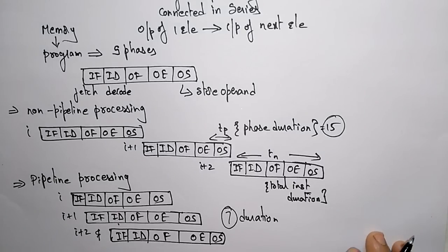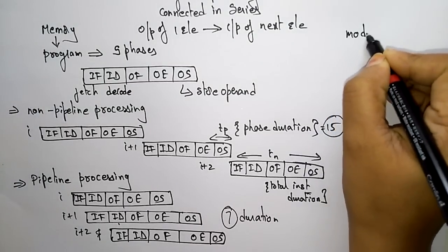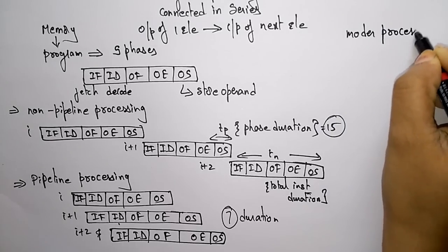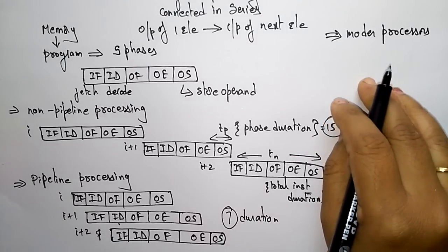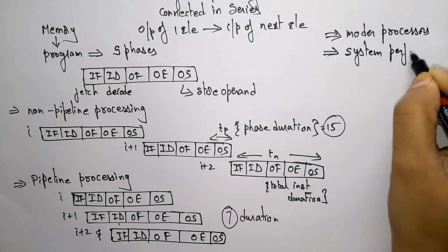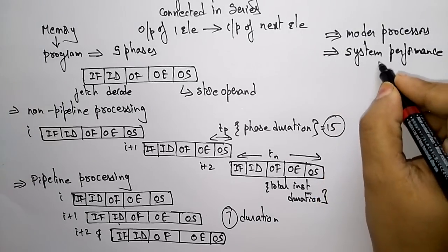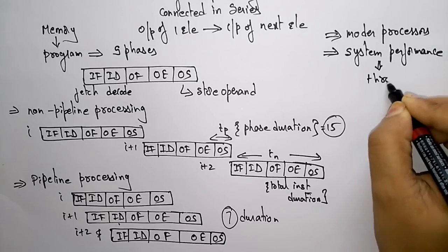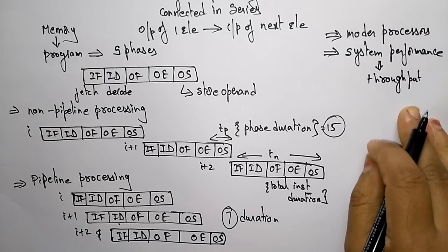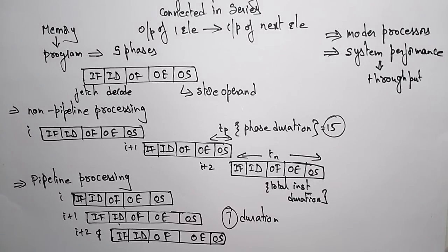Pipelining is widely used in modern processors and it improves system performance. The pipelining processor is used to increase system performance in the form of throughput. Throughput is nothing but the number of tasks done at a given time. The main idea of pipelining in computers is that the processor executes a program by fetching and executing the instructions one after the other.